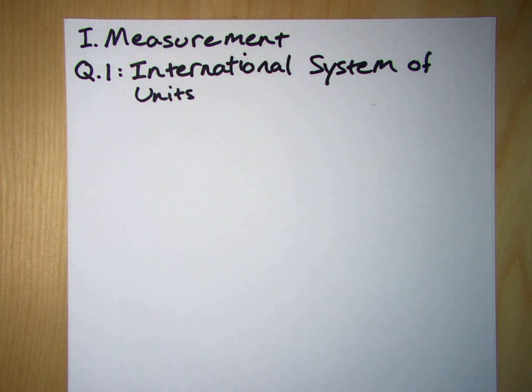Any physical quantity can be multiplied by 1 without changing its value. For example, 1 minute equals 60 seconds, so 1 equals 60 seconds divided by 1 minute. Similarly, 1 foot equals 12 inches, so 1 equals 1 foot divided by 12 inches. Using the appropriate conversion factors,